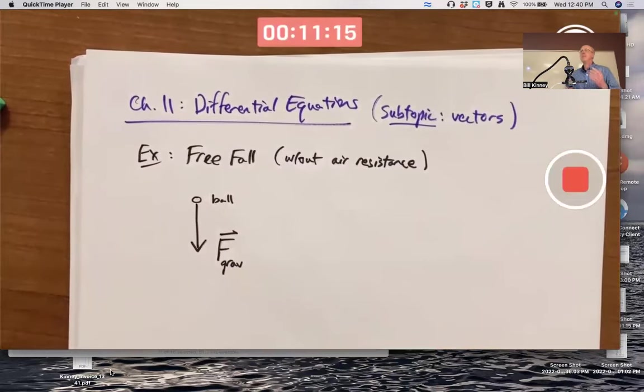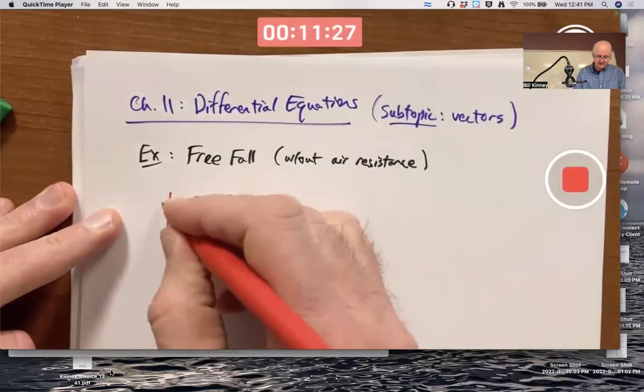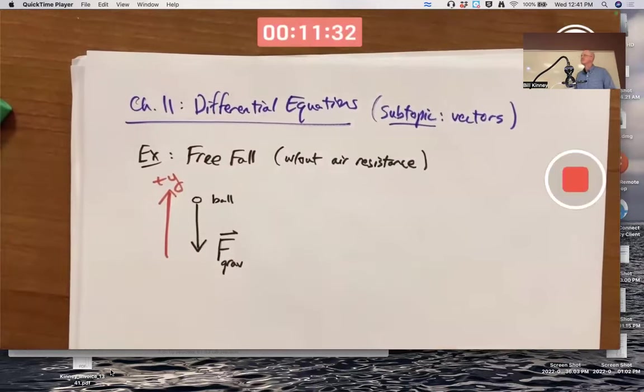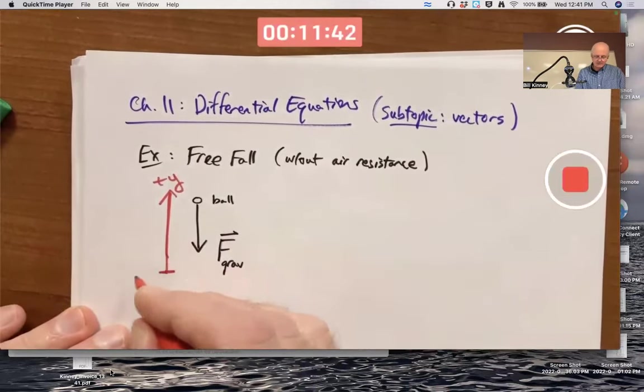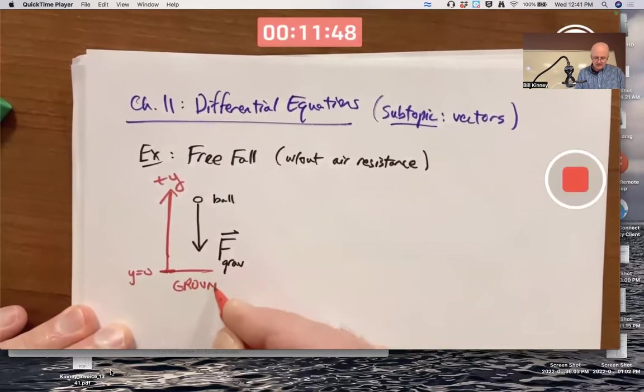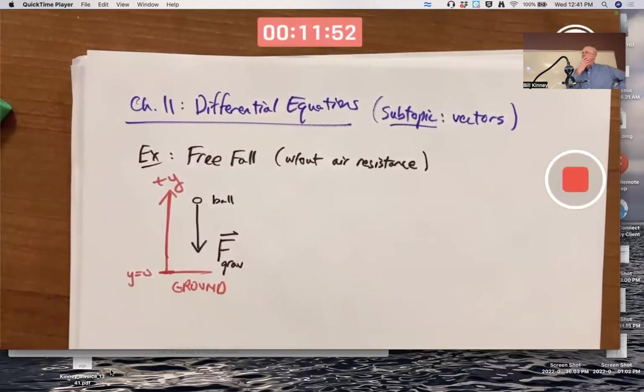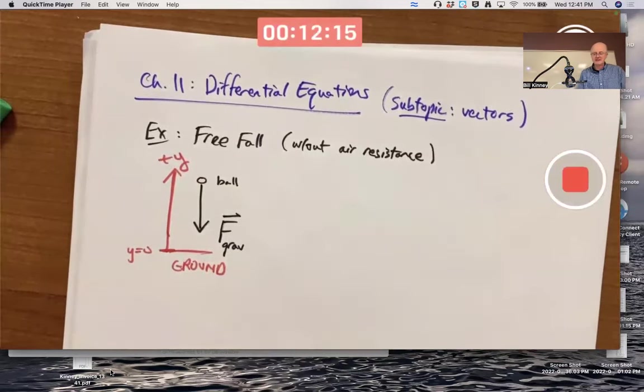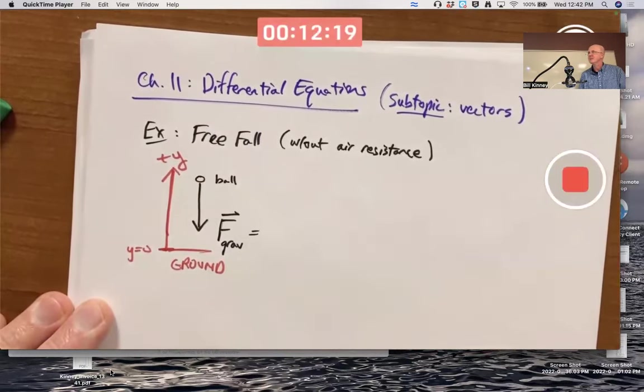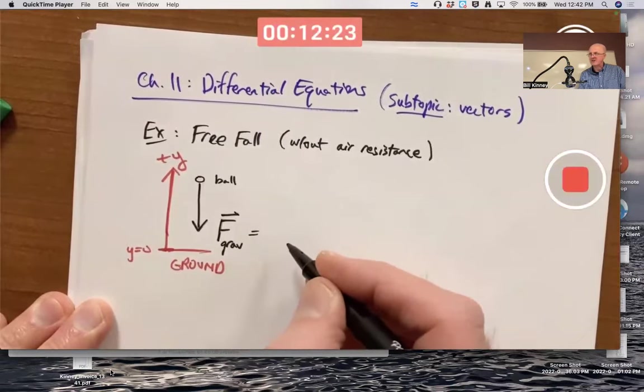Force due to gravity, F sub grav. Before we write down an equation for this force due to gravity, we should pick a positive direction, either upward or downward. It doesn't really matter which one you do. It's a bit more traditional to do upward. Upward is the positive y direction. And probably it would make the most sense to also put y equals zero to be ground level.